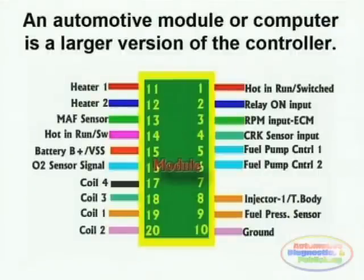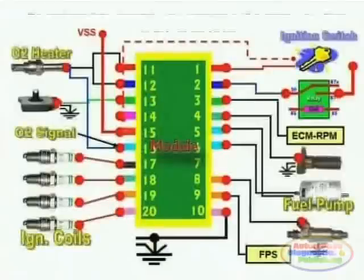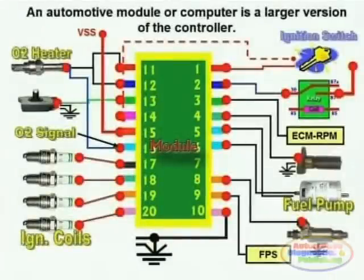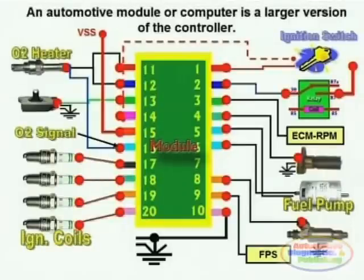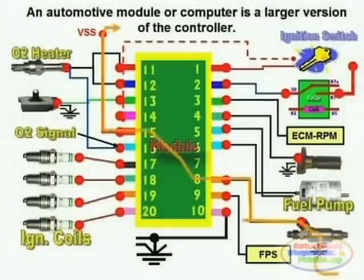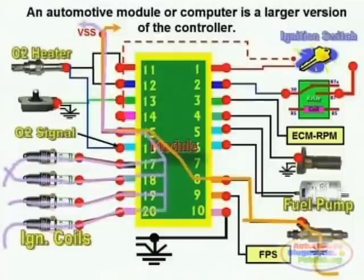Here we see an actual engine control module with its different input and output components. The current path of a module has to be detected and drawn on the diagram using a highlighter in order for the technician to follow the specific current path and be able to diagnose and repair the system.